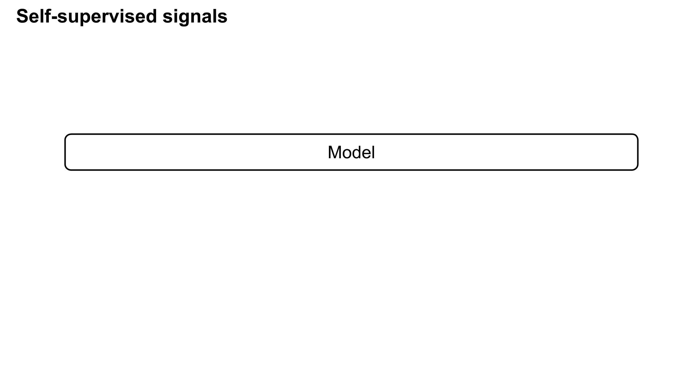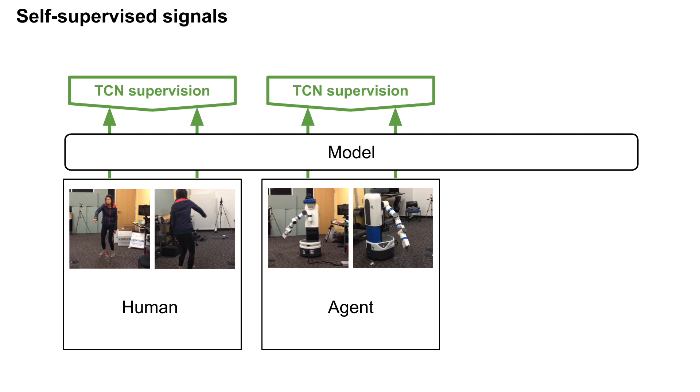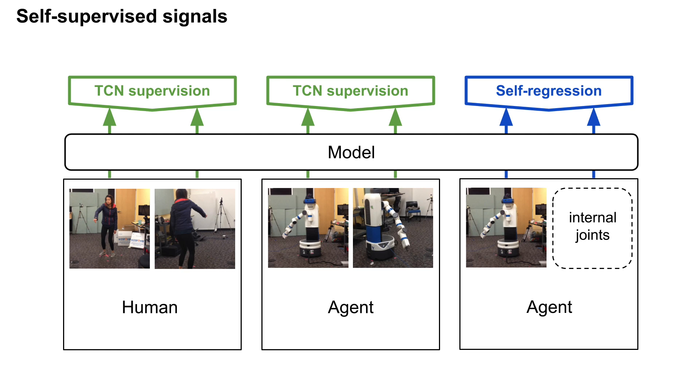We explore another way to learn robotic control for the task of human pose imitation. As before, the robot learns an invariant TCN embedding by observing humans and itself without any correspondence labels. Then the robot learns to control its own body by training to output its internal state given an image of itself.